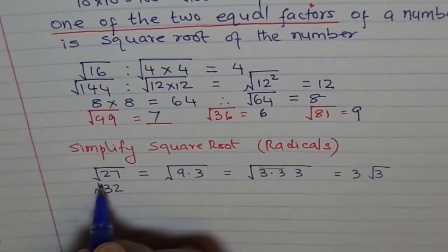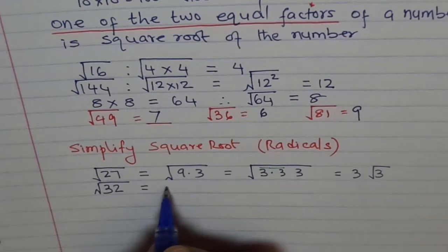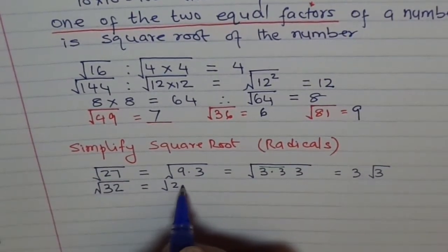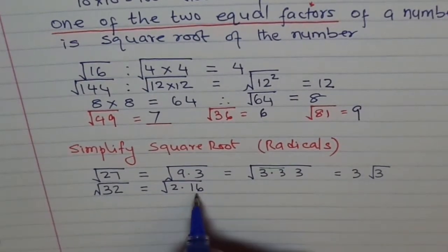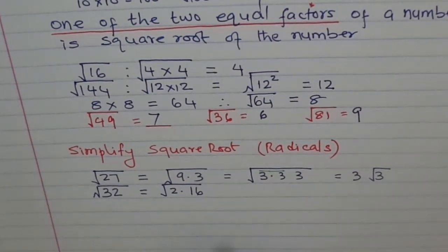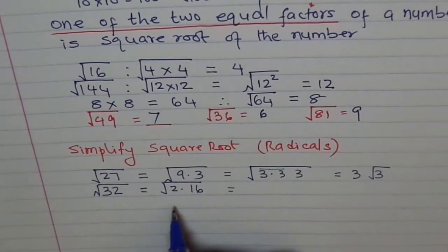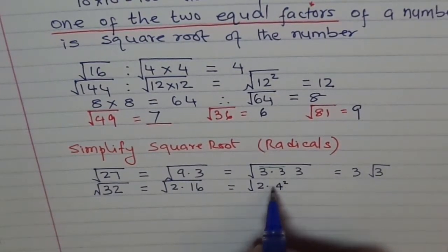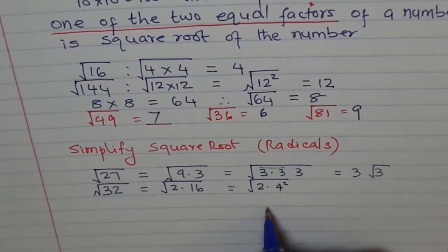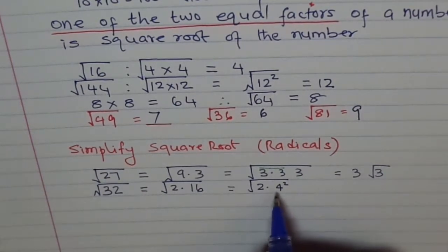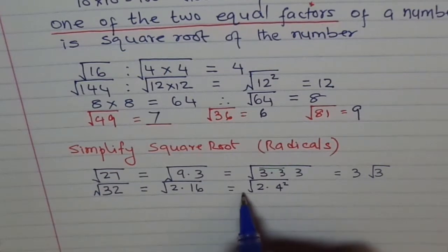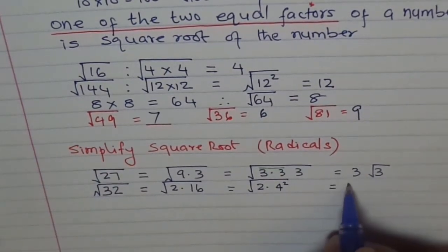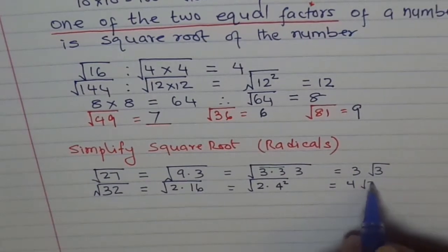Let's take another number: 32. 32 could be written as square root of 2 times 16. We know 16 is a perfect square — 4 times 4 is 16. So I can write this as 2 times 4 squared. When we have two equal factors, one of them can be taken out of the square root. So we can write this as 4 square root 2.